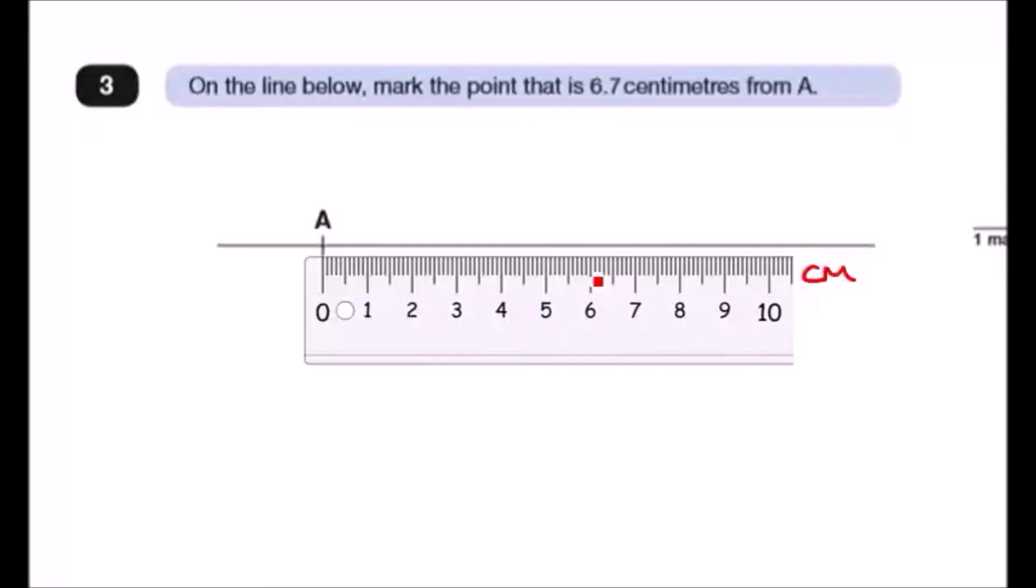And then we just follow up finding where 6.7 is. So 6.7 is going to be basically between 6 and 7, and you just count up these little lines. So in the middle is of course 6.5, and then next one would be 6.6 and then 6.7. So 6.7 should be about here. That's it, all done.